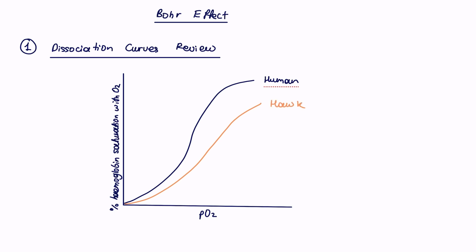Taking a hawk as an example, which is a bird that does a lot of exercise flying in the sky and being a predator, it will have hemoglobin with lower affinity for oxygen. Oxygen will be unloaded more readily for respiring tissues, and hence this dissociation curve is shifted to the right.